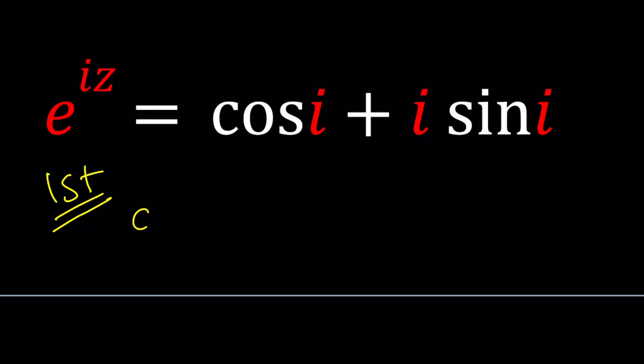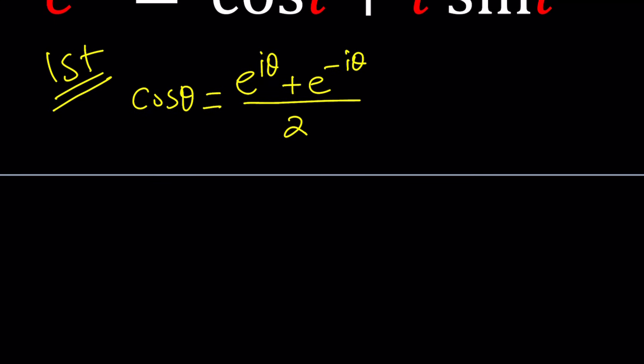So these identities come from a really nice formula. We'll talk about that in a little bit. But cosine θ can be written as e to the iθ plus e to the negative iθ over 2. I'm just going to give you these identities because we'll talk about them one more time, and let's just present these without proof first.